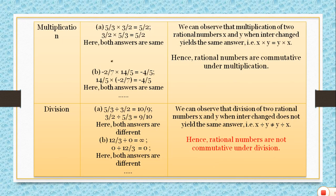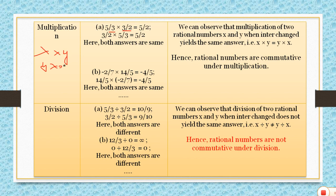Moving towards multiplication: the result will always be the same regardless of position swapping. 5 by 3 multiplied by 3 by 2 — whether you multiply x by y or y by x, the answer is 5 by 2 in both cases. Another example: minus 2 by 7 multiplied by 14 by 5 gives minus 4 by 5. Swapping positions, 14 by 5 multiplied by minus 2 by 7 also gives minus 4 by 5 — same result.